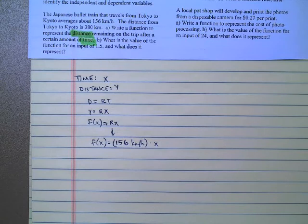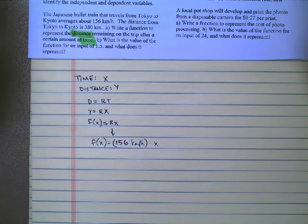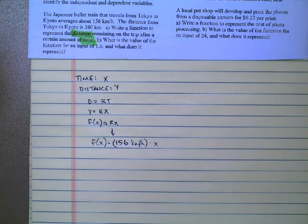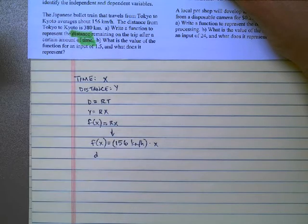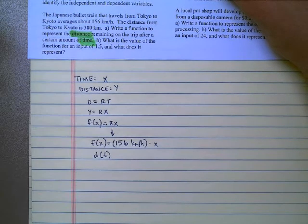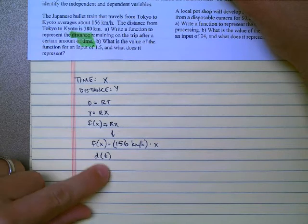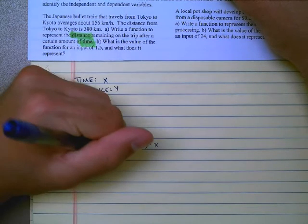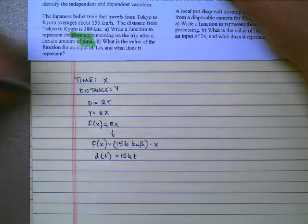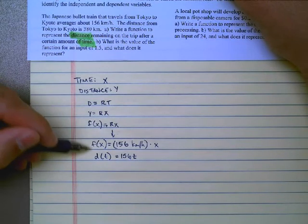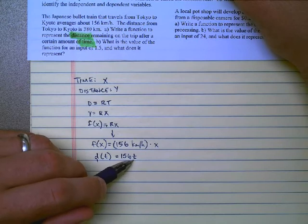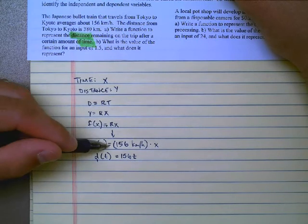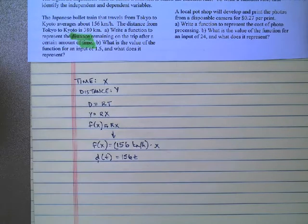You might also see this because we're talking about time. Which letter you use doesn't really make a difference in the problem. The distance that we travel after any given time, the distance based on the input of how long I've been traveling, is equal to 156 times the time. These two things are saying the exact same thing. If I want to calculate the distance, I take 156 times how long I've been traveling. This says if I want to find the output, I take 156 times the input.